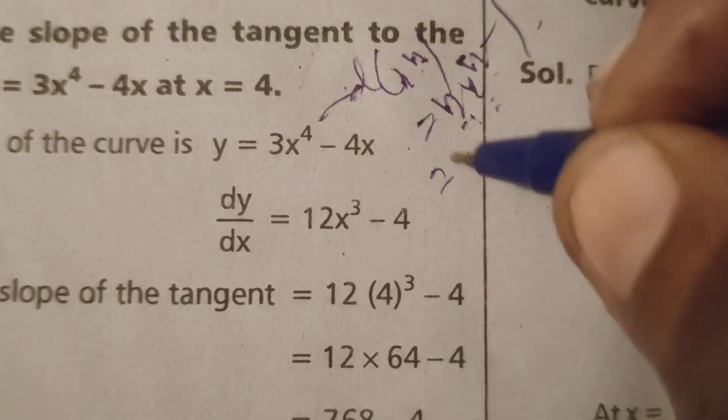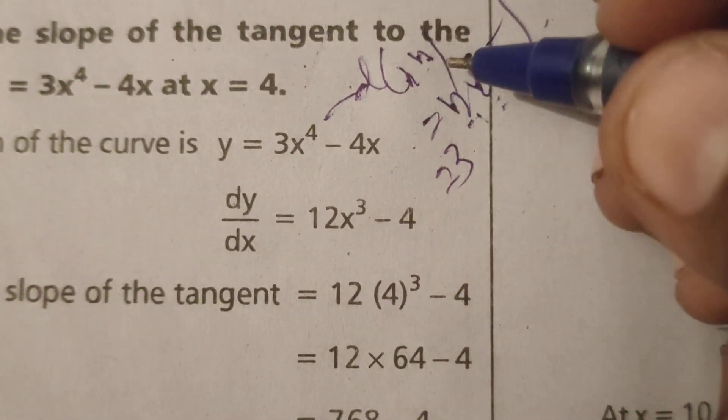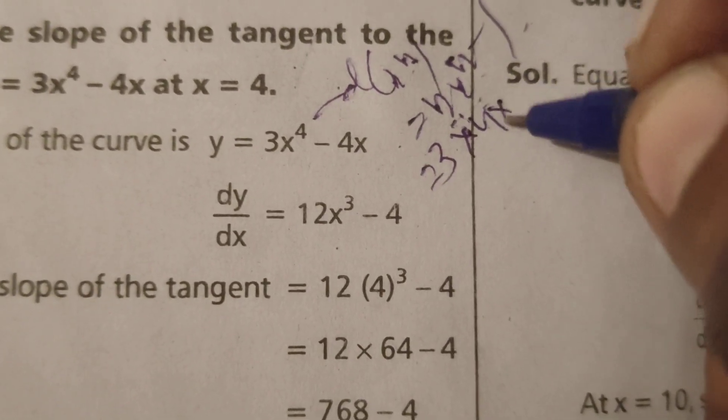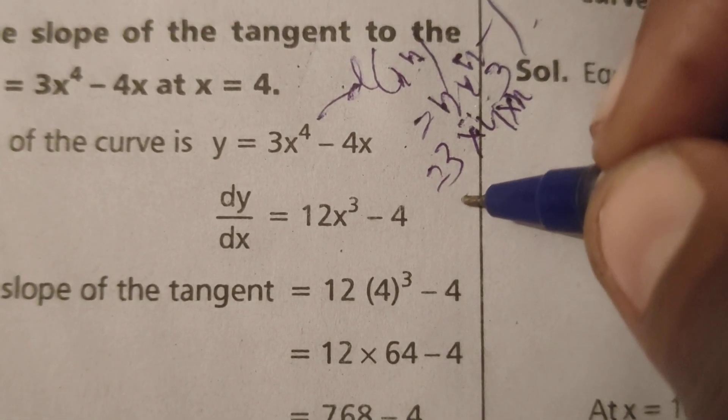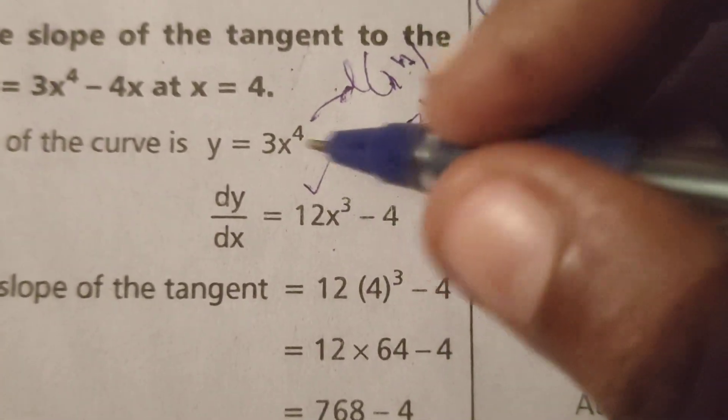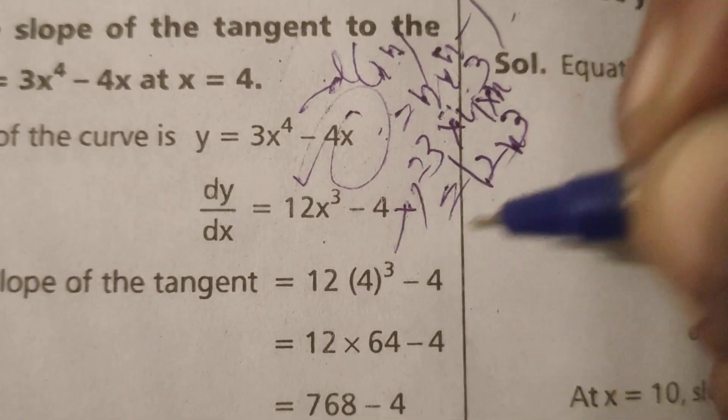Here 3 is already there. According to this formula, differentiation of x to the power 4 is 4 times x to the power 4 minus 1, that is x cubed. Therefore 12x cubed. Here I write 12x cubed minus 4 times the differentiation of x, which is 1. So 4 times 1 equals 4.